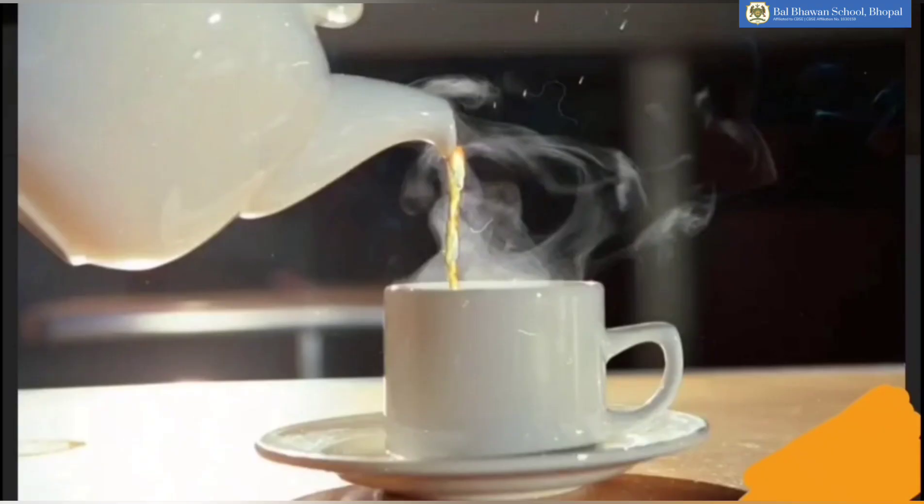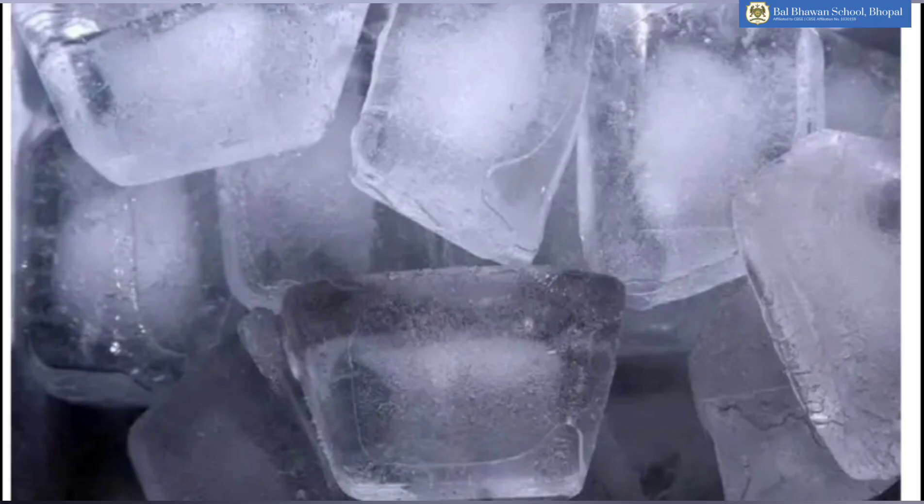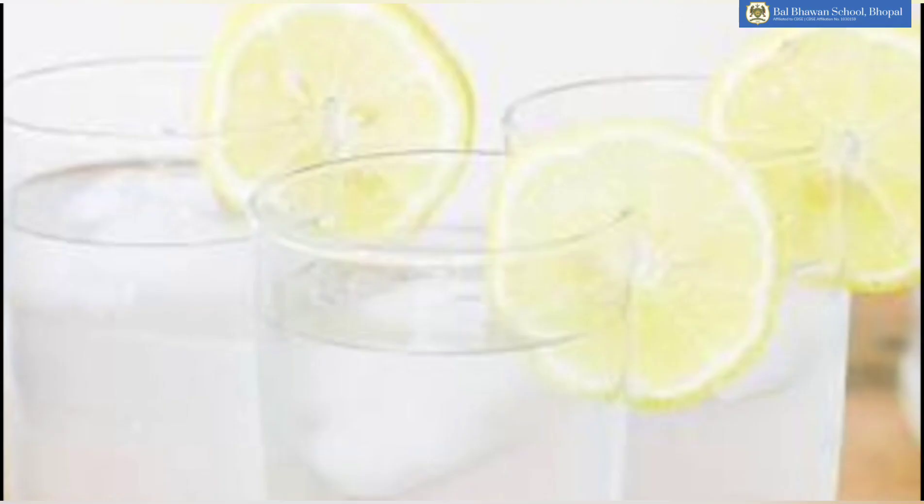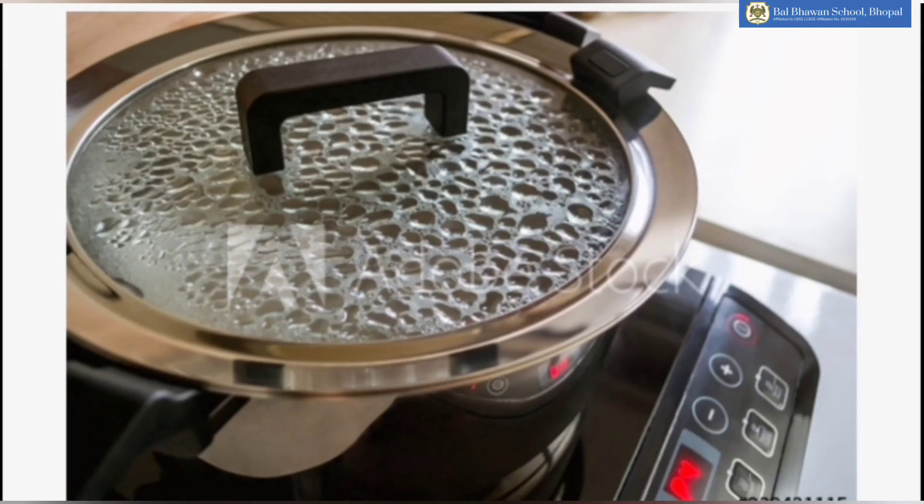Today children at home observe all those activities happening around you in which you can see changes in the forms of water. For example, if you prepare a lemonade today, you will observe in that outside the glass you will see water droplets and inside the glass you will see liquid form of water and solid form of water. Similarly, while preparing any dish, you may see again the water as liquid on the lid.